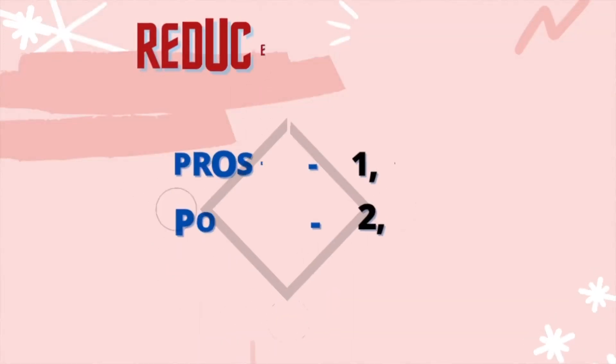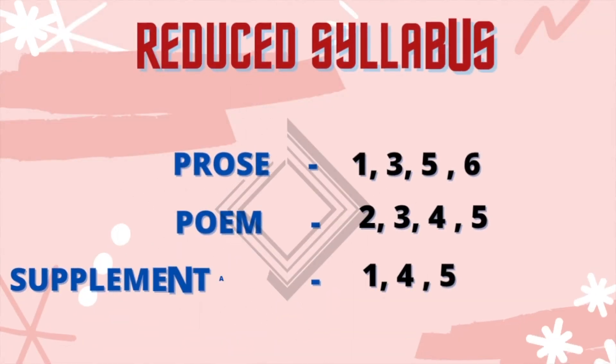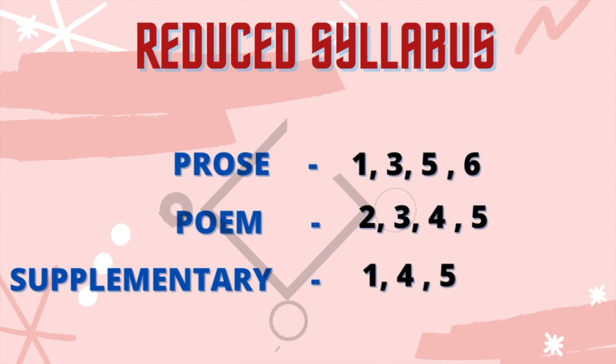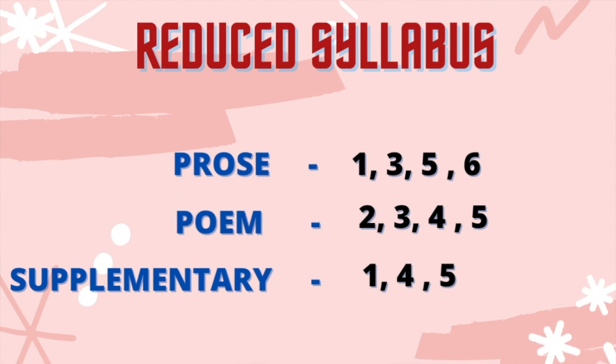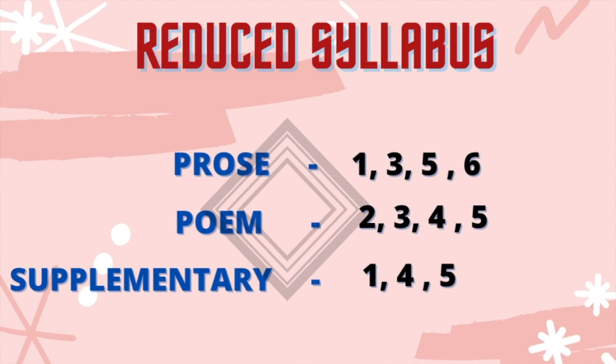First of all, if you want to know the reduced portions, it will be very easy for us. There are several lessons in the prose — 1, 3, 5, and 6. We have 2, 3, 4, and 5. For the Supplementary Reader, we just have 1, 4, and 5. There are many portions, and knowing these will help you focus on what matters.